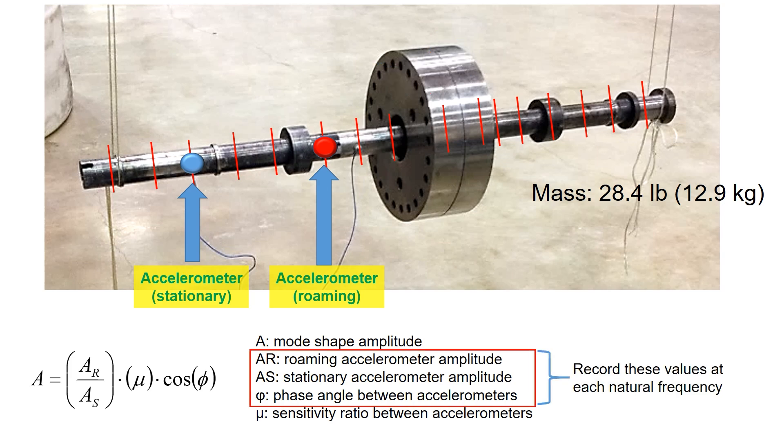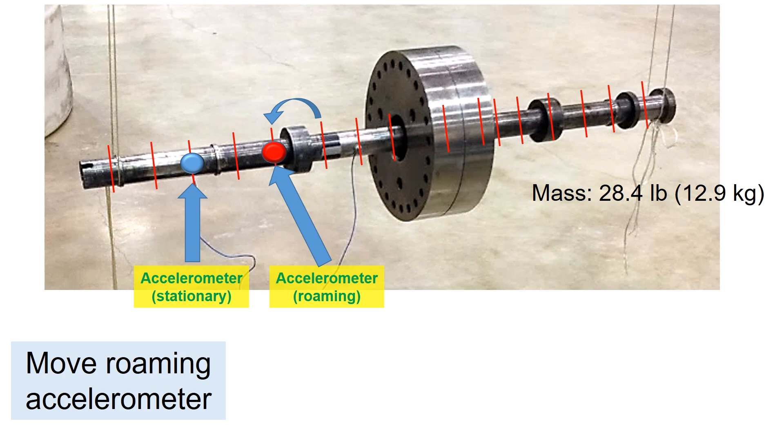So the process looks like this. Move the roaming accelerometer to the next location, impact the rotor, record the data.